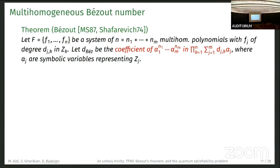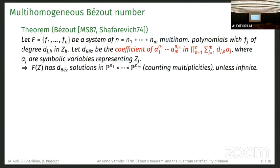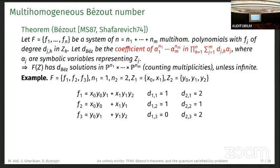One can define the multi-homogeneous Bézout number. We have N equations, which needs to be the same as the total number of degrees of freedom. We can define the Bézout number as the coefficient of this expression here. We put the degrees into the exponent, and these alphas are symbolic variables representing the Z_j. We put the degrees in here. It has d_Bézout solutions. For a generic instance, it will have exactly these solutions counting multiplicities. For a concrete instance, there's always at least d_Bézout solutions, and if there's not, then we have infinite solutions.